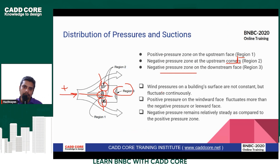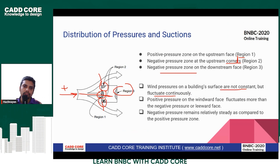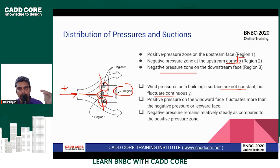Wind pressure on the building surface is not constant but it fluctuates continuously. The wind is fluctuating, so the fluctuation is on the positive side because our winter is cold in the first place.